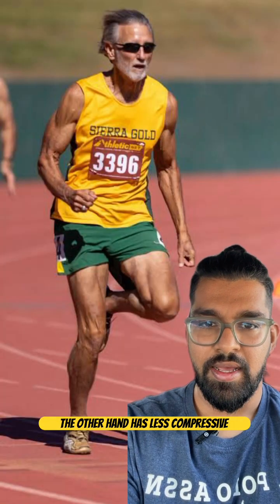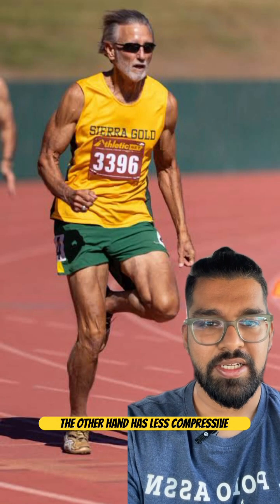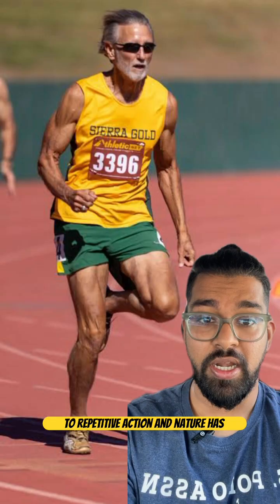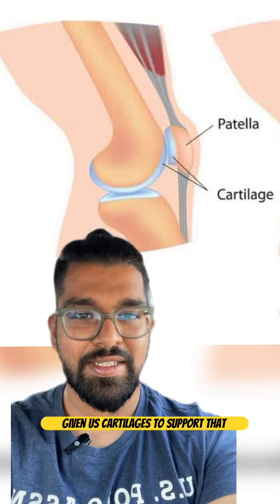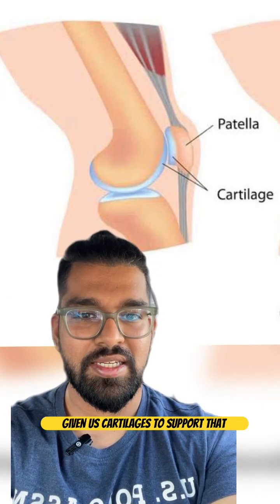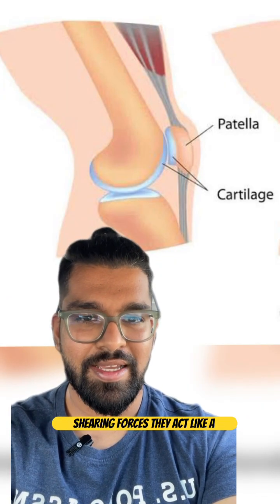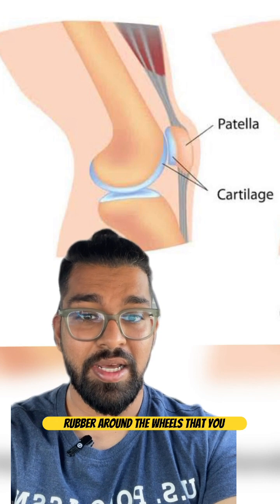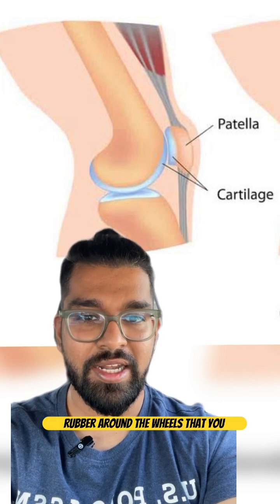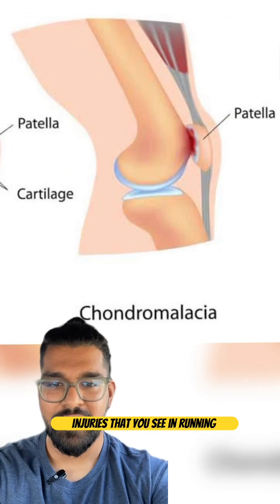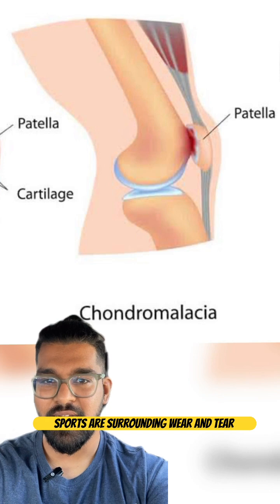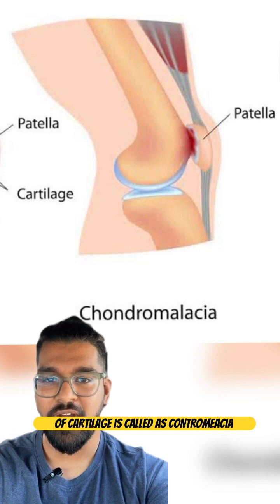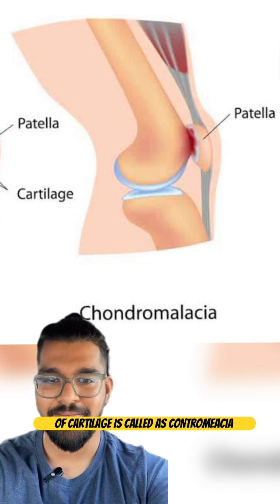Running, on the other hand, has less compressive forces but higher shearing forces due to repetitive action. Nature has given us cartilages to support those shearing forces — they act like rubber around the wheels that you see in vehicles. Therefore, the injuries you see in running sports are surrounding wear and tear of cartilages, called chondromalacia.